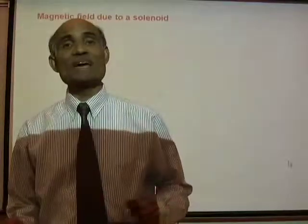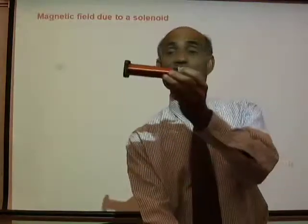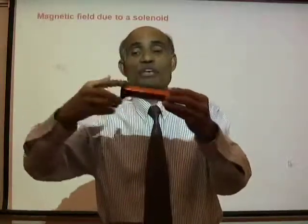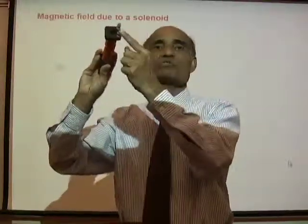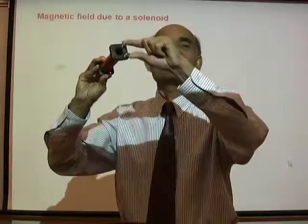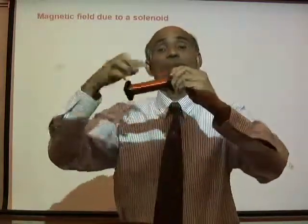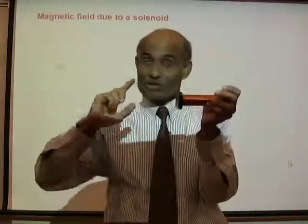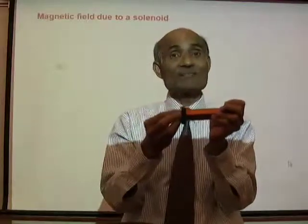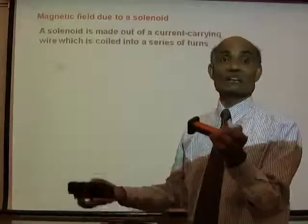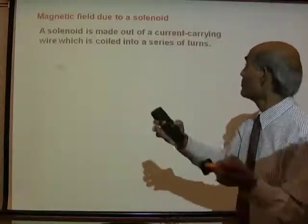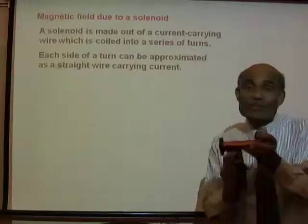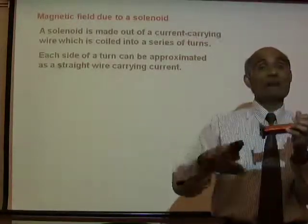Our next concept is the magnetic field due to a solenoid. A solenoid is a conducting wire wound on a frame with a number of turns. When a current flows through it by connecting it across a battery, a magnetic field is generated. Each side of a turn can be approximated as a straight wire carrying current either up or down.